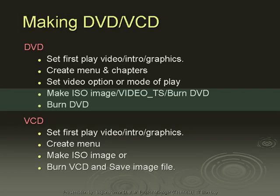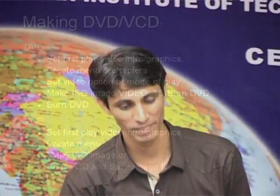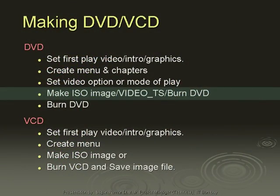Then, if you want to create only one disk with no need to keep the data, burn directly to DVD. If you want a backup of this data for future multiple copies, create an ISO file first. Then create the VIDEO_TS folder and burn the DVD. There is no need to create VIDEO_TS separately — you can directly burn the DVD if you have an ISO image.